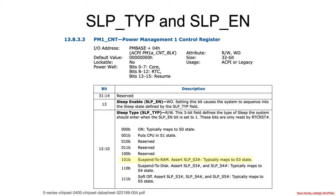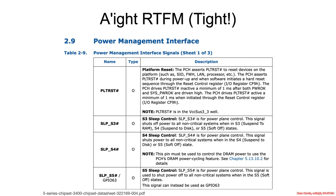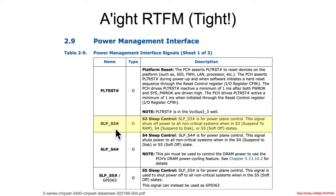S3 is what we're going to care about the most, but there's also S4 and S5. The SLP_S3# signal controls the S3 power plane and shuts off power to all non-critical systems when in S3. We've also got S4 and S5 in the same documentation, but we don't care as much about those for the purposes of the attack that we're making our way towards.